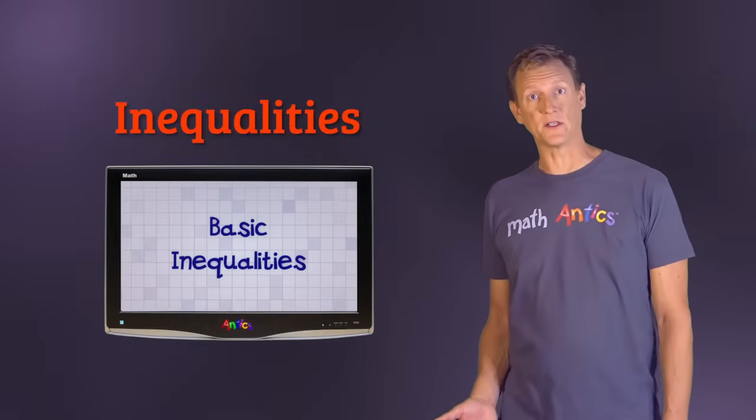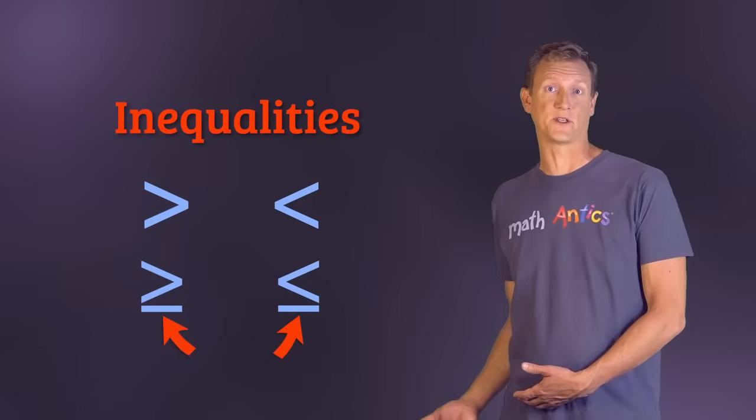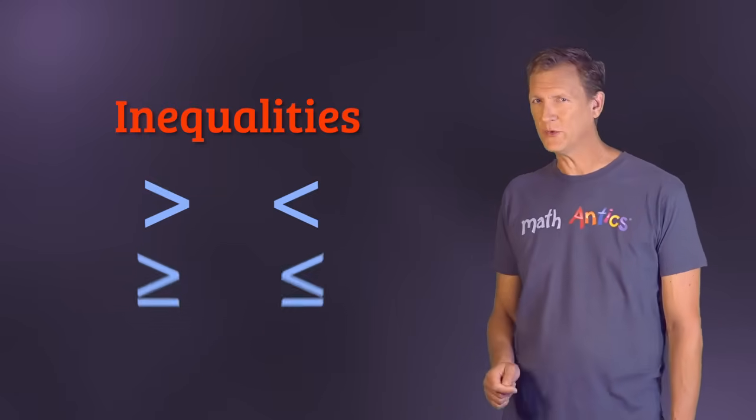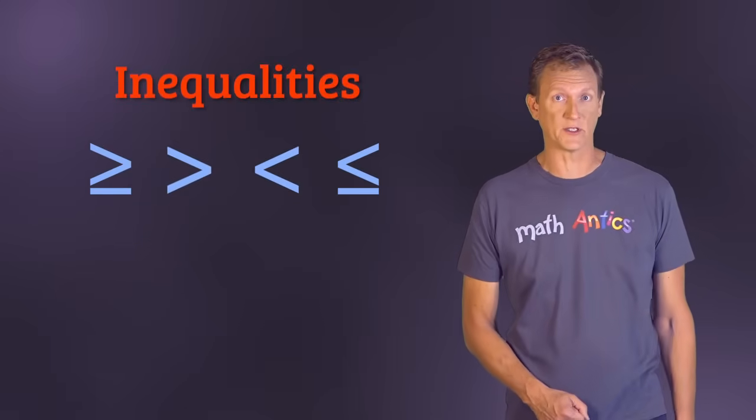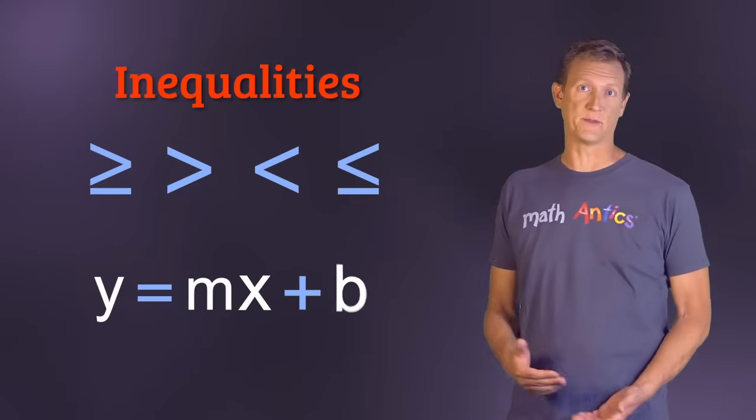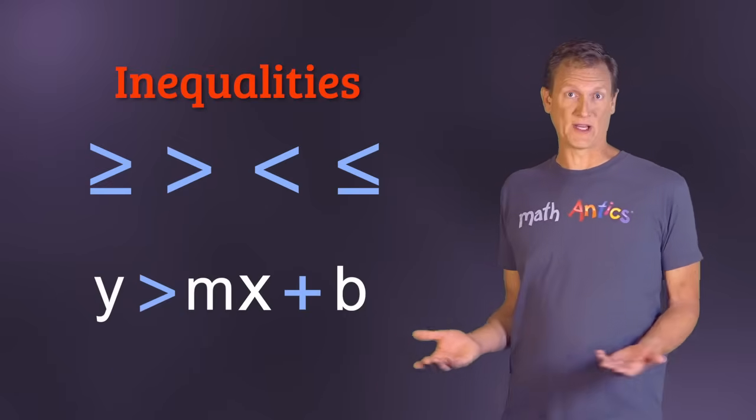Those sorts of comparisons use the greater than and less than signs, along with the versions of those that include the equal sign. And in this video, I'm going to show you what happens when we use those signs in algebraic equations. Like the equation of a line, y equals mx plus b. What would it mean to have something like y is greater than mx plus b instead?